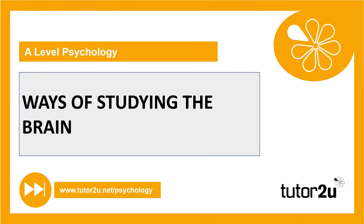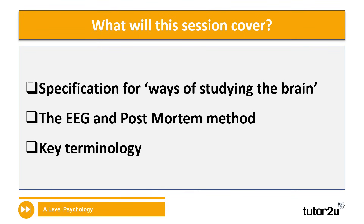Hi everybody, welcome to the first lesson in week nine where, as part of your biopsychology topic, we'll take a look at the different ways of studying the brain. We'll first start with a specification glance and see what you have to know. We'll take a look at EEG, electroencephalogram, and post-mortem methods, and we'll look at all the key terminology that you'll have to use when you evaluate these as well.